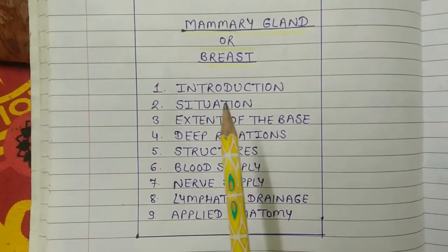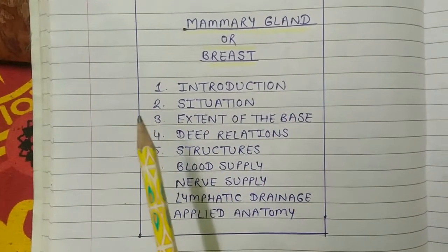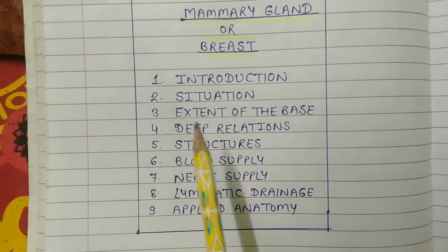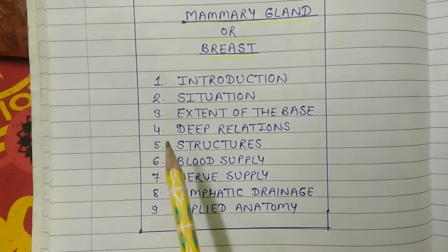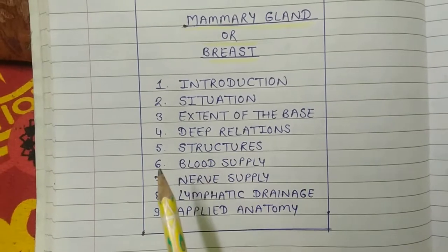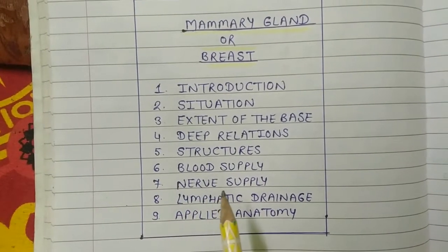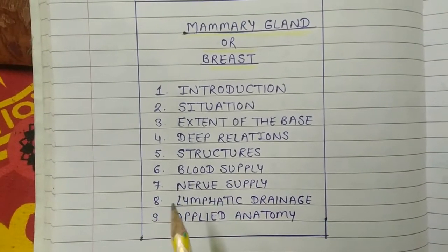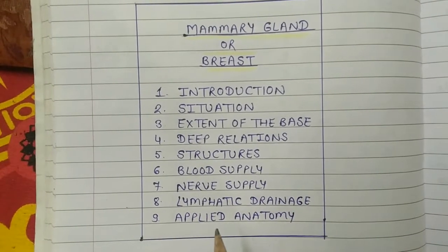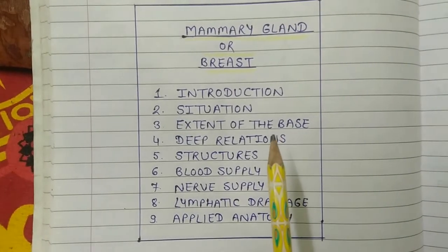We will study them under the following subheadings: 1. Introduction, 2. Situation, 3. Extent of the base, 4. Deep relations, 5. Structures, 6. Blood supply, 7. Nerve supply, 8. Lymphatic drainage, 9. Applied anatomy of breast. We will describe all these points in detail.